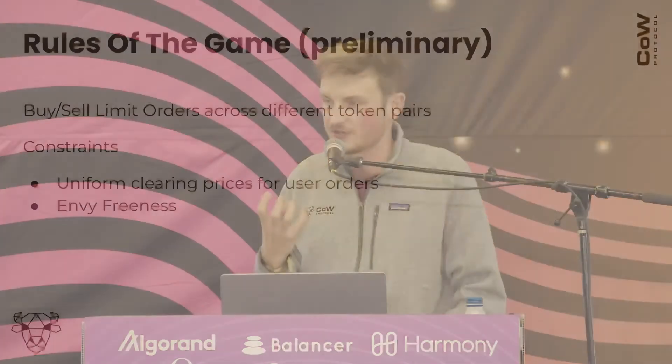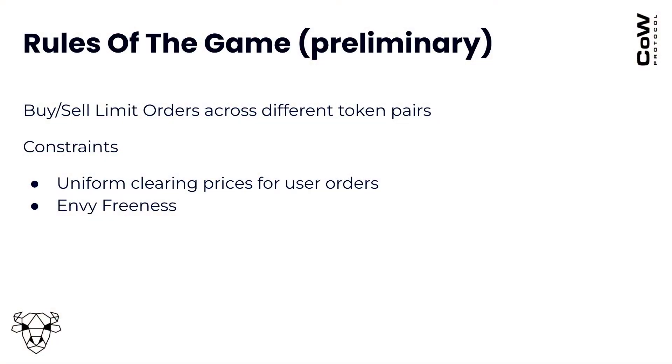The second constraint is called envy-freeness. It prevents solvers from censoring orders they might not want to match in order to extract value from another trader. For example, if I'm willing to buy ETH at $5,000 and someone is willing to sell ETH at $4,000, a solver cannot match me at $4,500 because that would leave the seller envious - if the price is $4,500, they're also willing to sell. We cannot announce prices that leave any trader jealous for not having been matched.